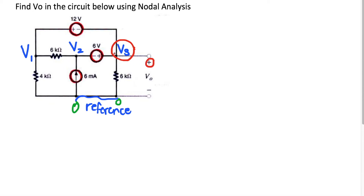We only need to solve for V3 because V3 is essentially equal to V0. This is because V3 is directly connected to the reference node. When we find V0, it's also directly connected to the reference node — the plus is on the V3 side and the negative is on the reference node side. So V3 is equal to positive V0.